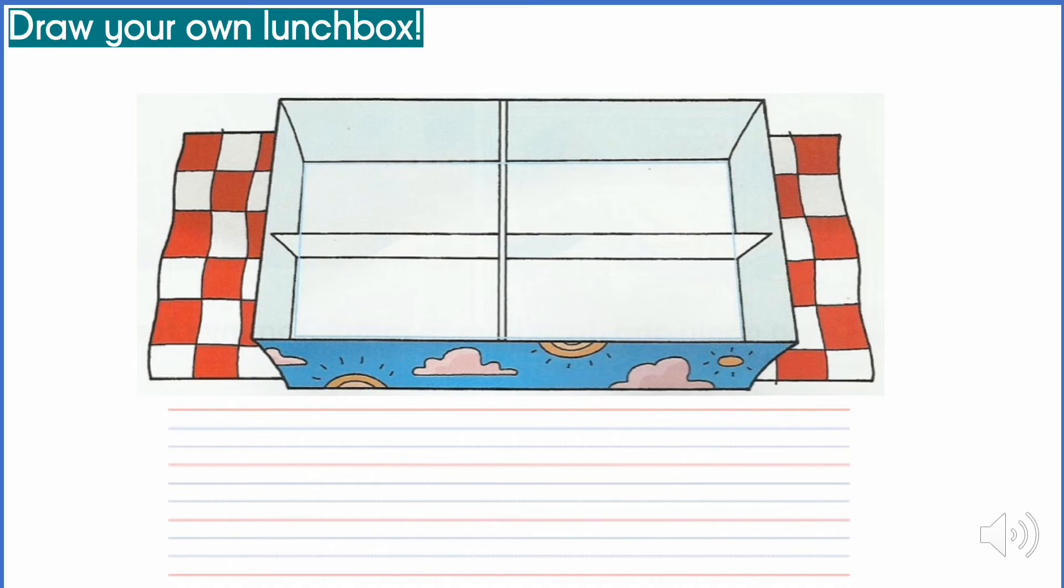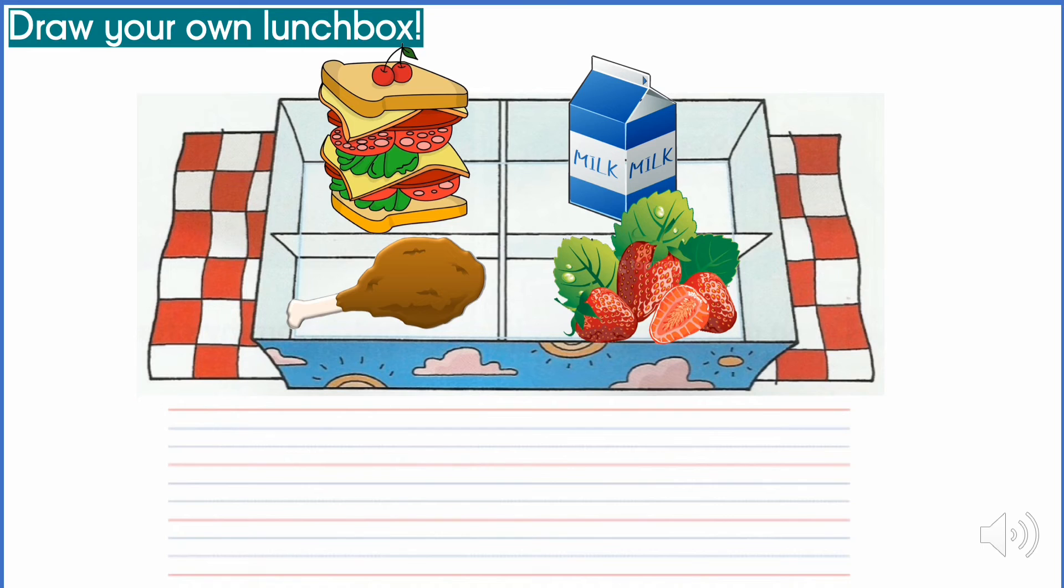For example, wow, look at all these food here. We have sandwich, we have milk, we have fried chicken and some strawberries. Draw and colour the picture.